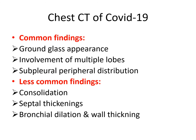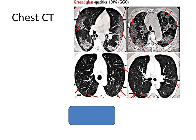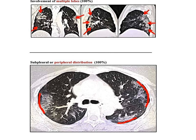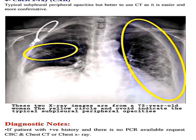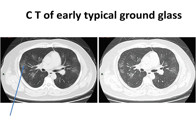Chest CT of COVID-19: common findings include ground glass appearance, involvement of multiple lobes, and sub-pleural peripheral distribution. Less common findings include consolidation, septal thickenings, bronchial dilation, and wall thickening. The characteristic finding is ground glass opacities, typically in the lower sub-pleural or peripheral distribution. CT is preferred over plain X-ray for early diagnosis, where typical ground glass opacities appear early.